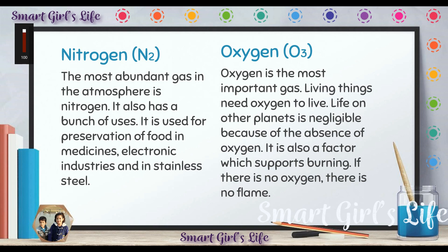Life on other planets is negligible, meaning we cannot survive on other planets. We will not survive on other planets because of the absence of oxygen — there is no oxygen on other planets. Since all living things need oxygen to live, even if we go to other planets, we will die there. Oxygen is also a factor which supports burning — if there is no oxygen, there is no flame, no fire.